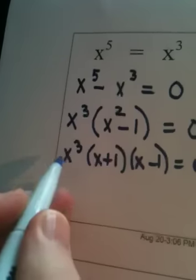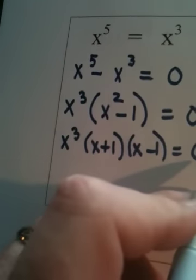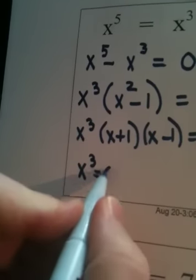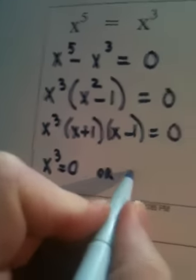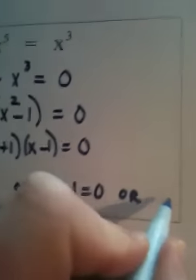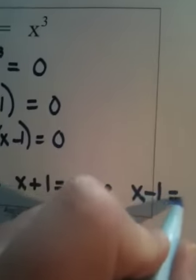So I have three factors multiplied together to give me 0. So either the first factor is 0, or the second factor is 0, or the third factor is 0.